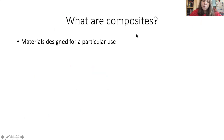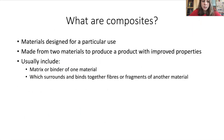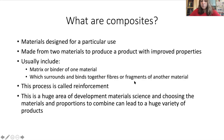The last new type of material is composites. Composites are materials that we're designing for a particular use, made from two materials to produce a product with improved properties. It usually includes a matrix or binder of one material which surrounds and binds together fabrics, fibers or fragments of another material - that process is called reinforcement. This is a really big area of development for material science, with so many combinations of what materials we choose and what proportions we put them in.